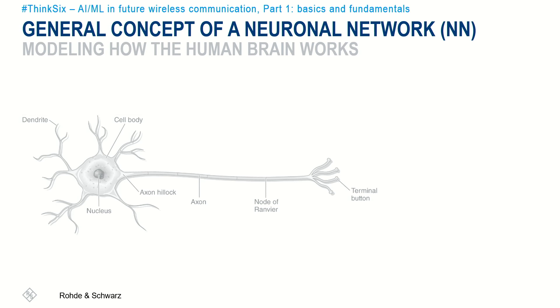Machine learning uses the concept of neural networks. I'd like to discuss the fundamentals so everyone has a general understanding. With neural networks, we try to model how the human brain operates. In straightforward terms, the brain consists of biological neurons — interconnected brain cells which process and pass on chemical and electrical signals. Today, we know that a neuron receives input via the dendrites, passing the data to the nucleus of the cell body, which processes the information.